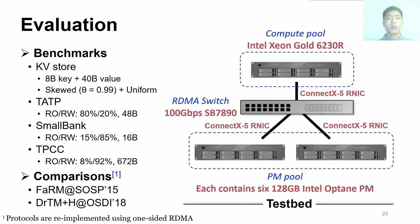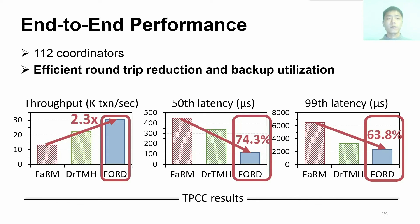For evaluation, we use one machine as a compute pool and two machines to form a PM pool. We implement a KiwiStore and three OLTP workloads as benchmarks. We compare FORD with FARM and DRTMH; our selective remote flush scheme is applied on them for remote persistency. The results on TPCC with eight warehouses and 112 coordinators demonstrate that FORD significantly improves throughput and reduces 50th and 99th percentile latencies, because our schemes reduce RDMA round trips and balance the load across PMs.